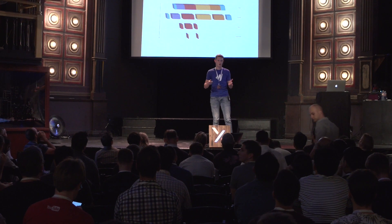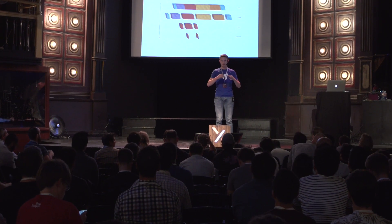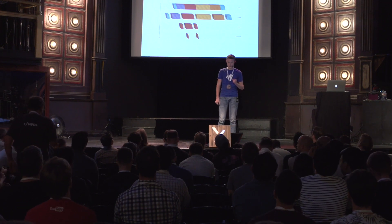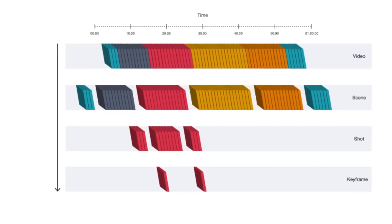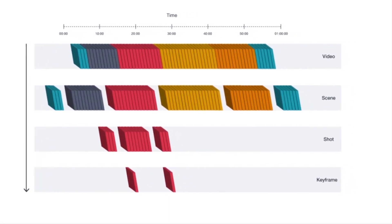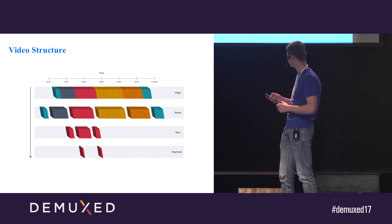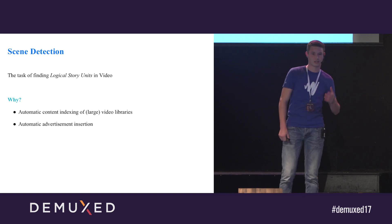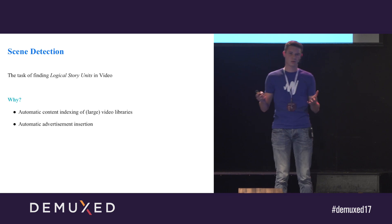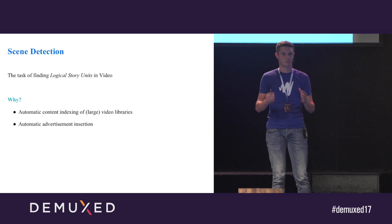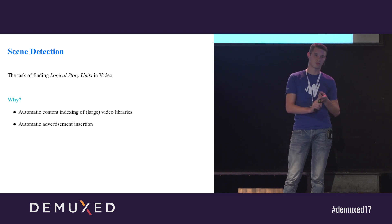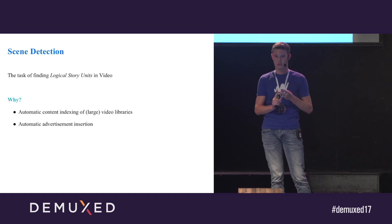Let's first talk about what a scene actually is. Some people attach different meanings to the word scene — some people like to call a shot a scene. In our case, we're trying to find clusters of shots in a video that represent scenes, so we're trying to find the story units. The task of scene detection is finding logical story units in video. We have two primary reasons to do this: one is automatic content indexing of large video libraries, and the second one is automatic advertisement insertion.